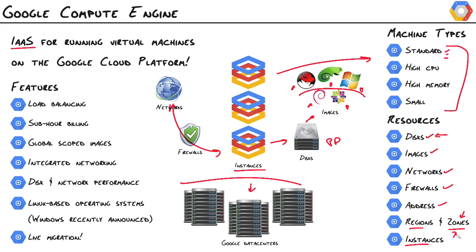Instances are also scoped at the zone level, so that means if we create a disk in a zone, only instances within that zone will be able to use that disk. Addresses are scoped at the region level. Images, networks, and firewalls are all known as global resources, accessible to any zone within a project. Think of a project as your own private network, your own cluster of virtual machines.